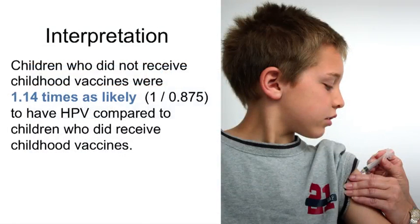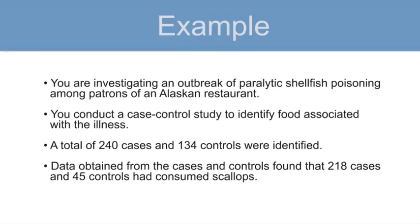Another way to interpret the effect of the vaccine is to compare the odds of those who did not get the vaccine to those who did. To do so, you take the reciprocal of the odds ratio, 1 over 0.875, which gives you 1.14. So children who did not receive childhood vaccines were 1.14 times as likely to have HPV compared to children who did receive childhood vaccines.